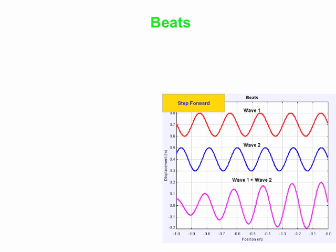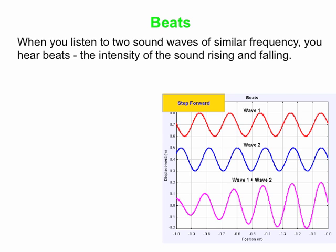An example of superposition and constructive and destructive interference is what we call beats. Beats involves waves of two different but similar frequencies — they have to be a little different, but not that far off from one another. When you hear beats, you hear a sound that goes something like 'wah, wah, wah, wah' — an intensity of sound that rises and falls.